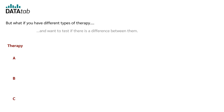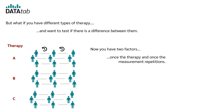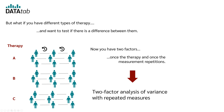You might be interested to know if therapy for high blood pressure has an effect on blood pressure — whether blood pressure changes over time. But what if you have different therapies and want to check if there is a difference between them? Now you have two factors: one is the therapy and one is the measurement repetition. Since you have two factors and one is a dependent sample, you use the two-factor analysis of variance with repeated measures.